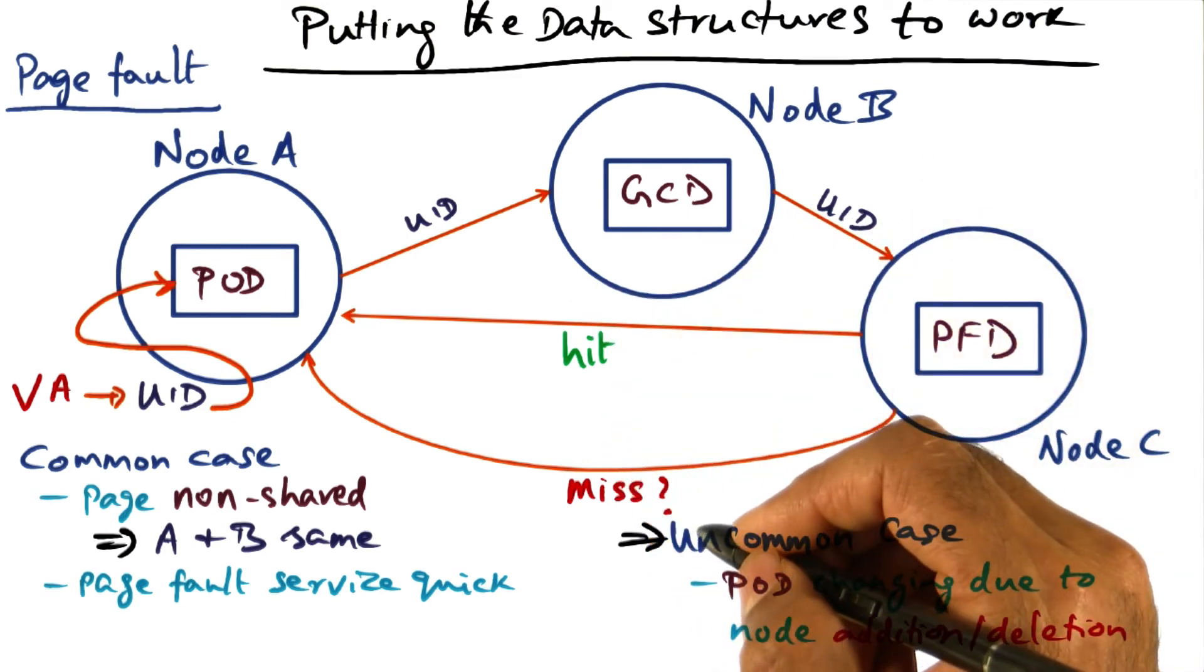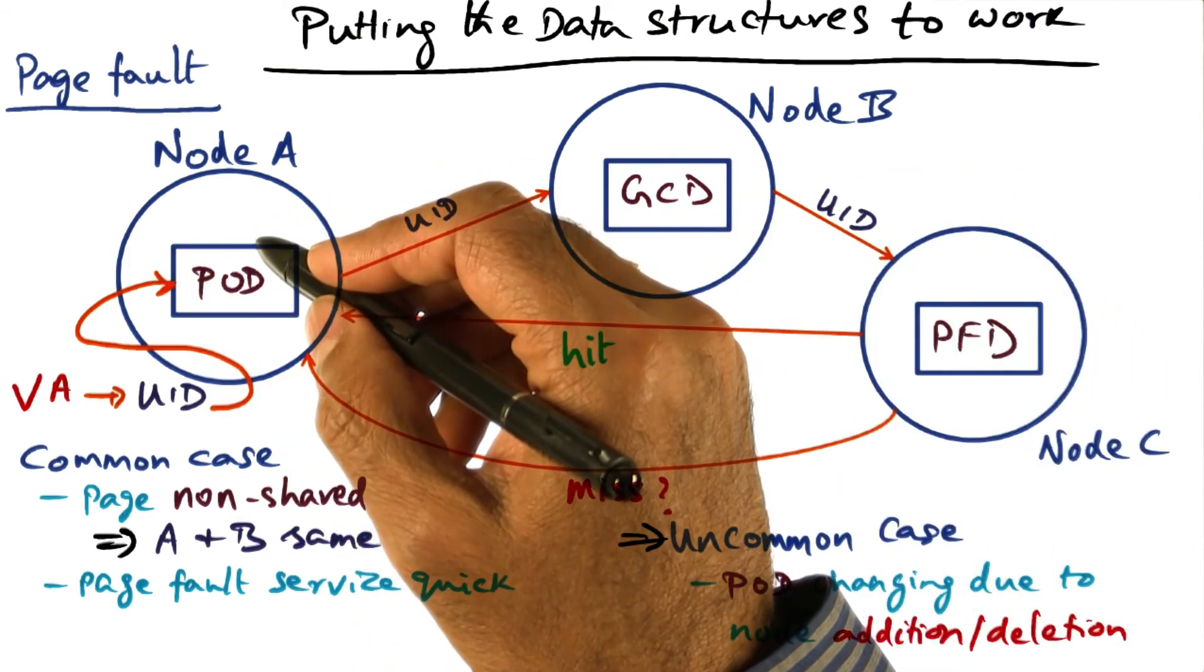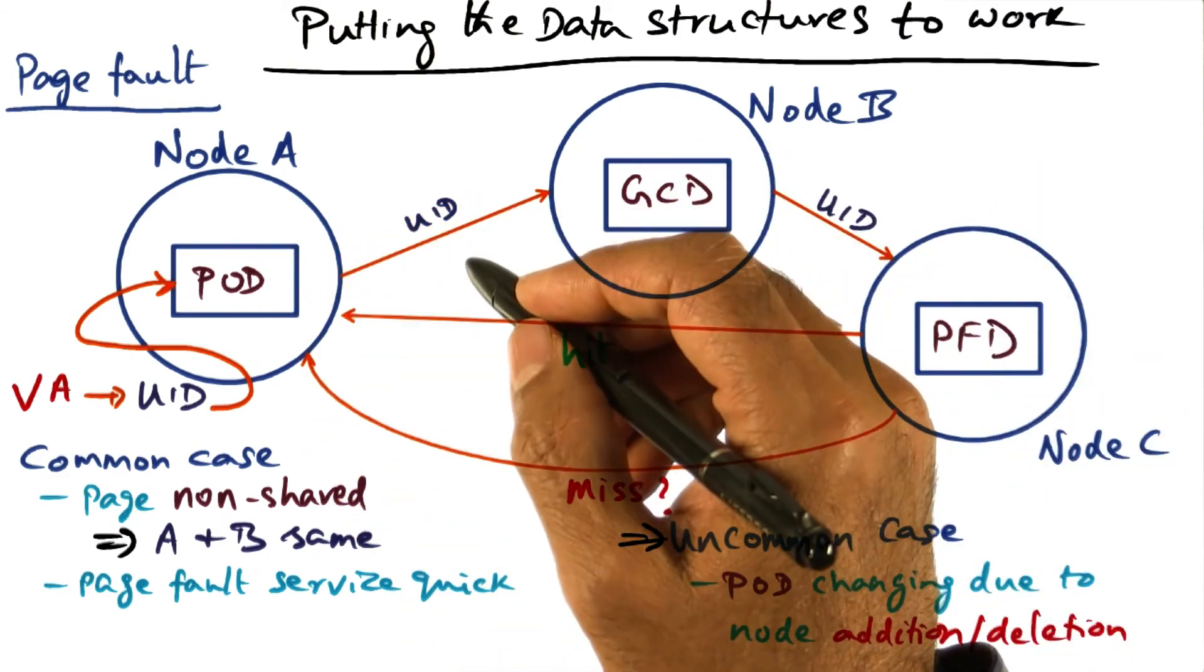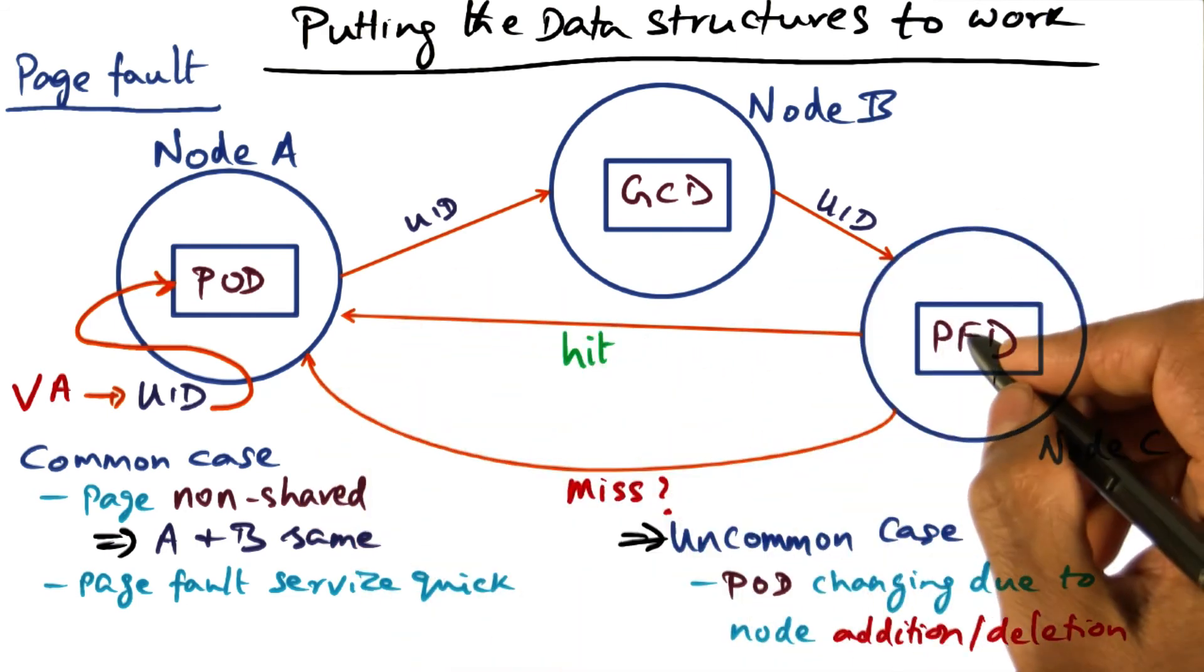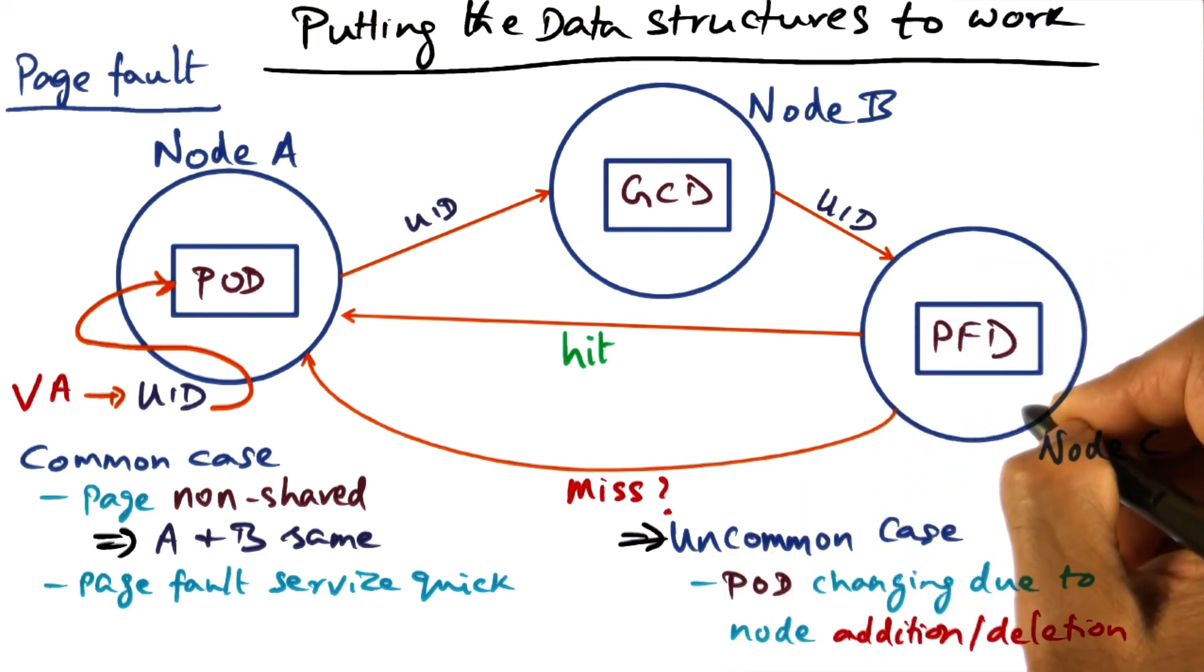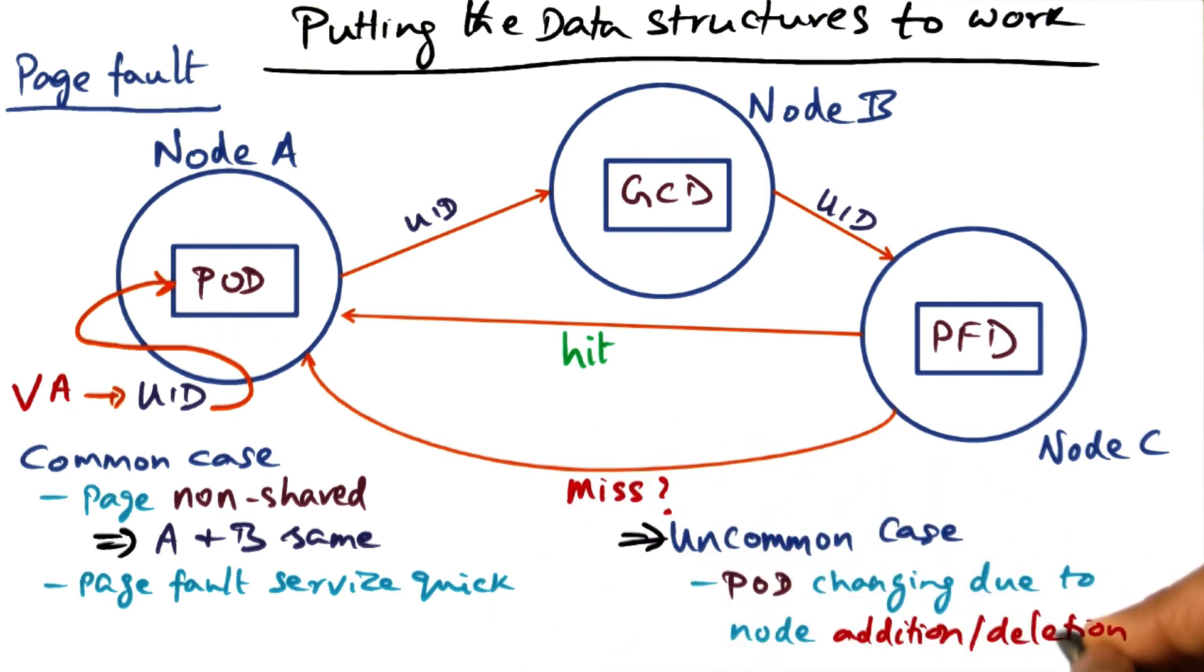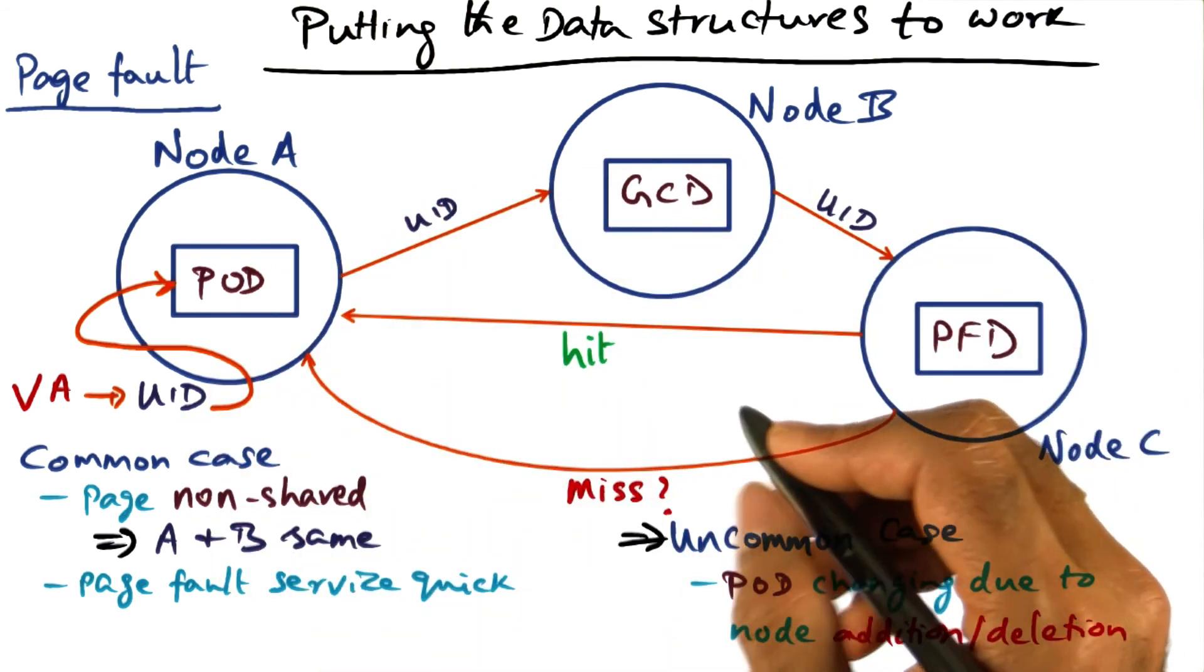But the important point I want to leave you with is that the common case is when both the POD and GCD are co-resident on the same node, and in that case you don't have a network communication to look up the GCD. Also, the miss happening when you do reach the PFD, that is also uncommon. It can happen because of replacement that has happened on that node, or because the POD has changed. And this is something that is going to happen relatively infrequently compared to the activities we're talking about in terms of page faults.